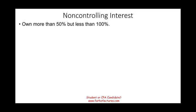So what is the non-controlling interest? It exists when one company owns more than 50% — meaning you have control — but less than 100%. So it's anywhere from 50.001% to 99.999%, meaning you don't own 100%.